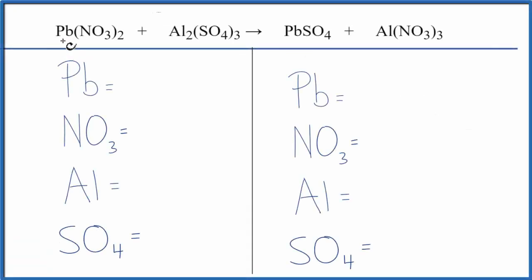In this video, we'll balance the equation lead to nitrate plus aluminum sulfate. So let's count the atoms up on each side.